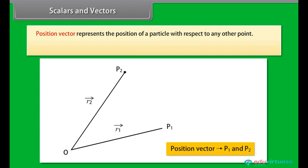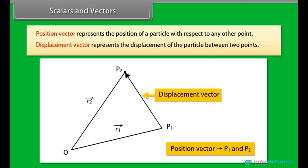Position vector represents the position of a particle with respect to any other point. Displacement vector represents the displacement of the particle between two points.